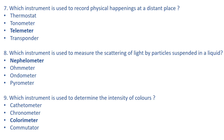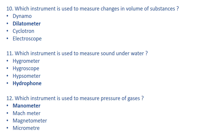Chronometer is used to determine the longitude of a vessel at sea. Commutator is used to convert AC to DC. Let's come to the next question: which instrument is used to measure the changes in volume of a substance? The answer is dilatometer.